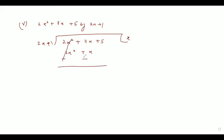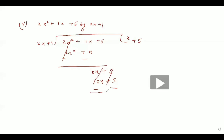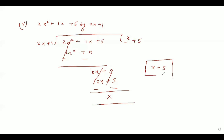We change the sign: 2x squared cancels, and we are left with 10x plus 5. Now 10x plus 5 divided by 2x plus 1 goes by plus 5 only, so we write 10x plus 5. We change the sign and both terms get cancelled. So the answer of the fifth part is x plus 5; the quotient is x plus 5.